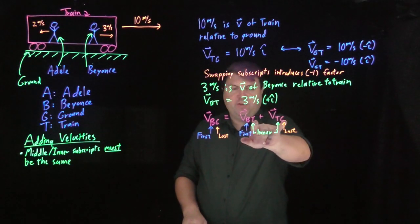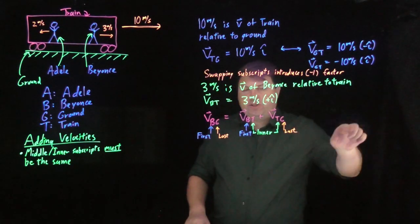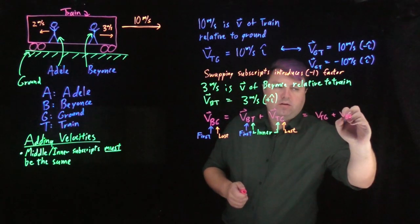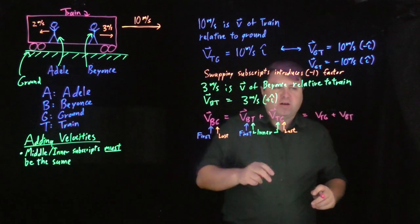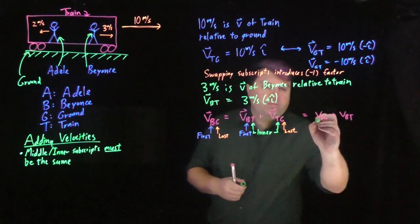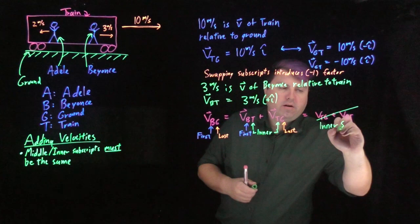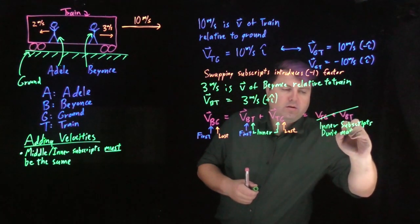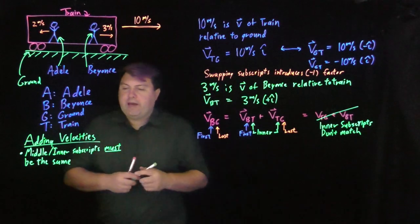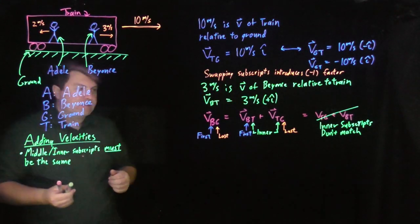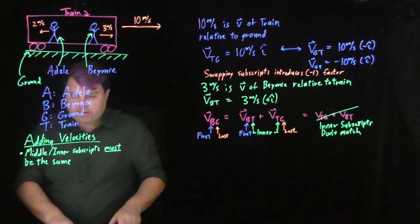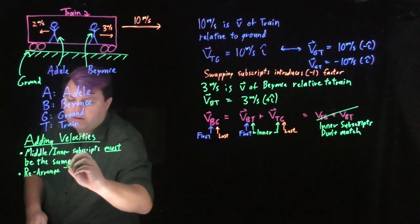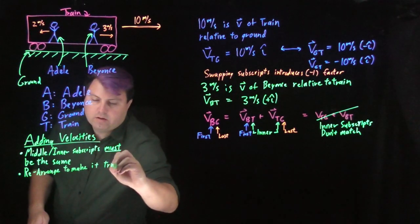The middle or inner subscripts must be the same. Mathematically, V_BT plus V_TG is the same as V_TG plus V_BT, but if the inner subscripts don't match, it won't tell us the correct result subscripts. So we want to rearrange until the inner subscripts are the same.